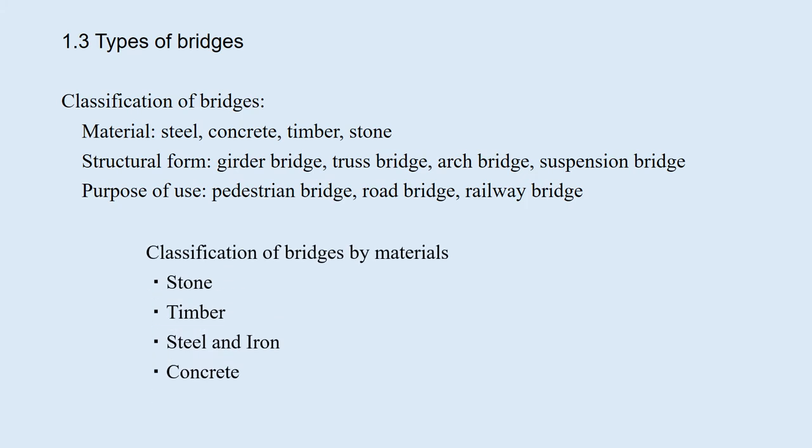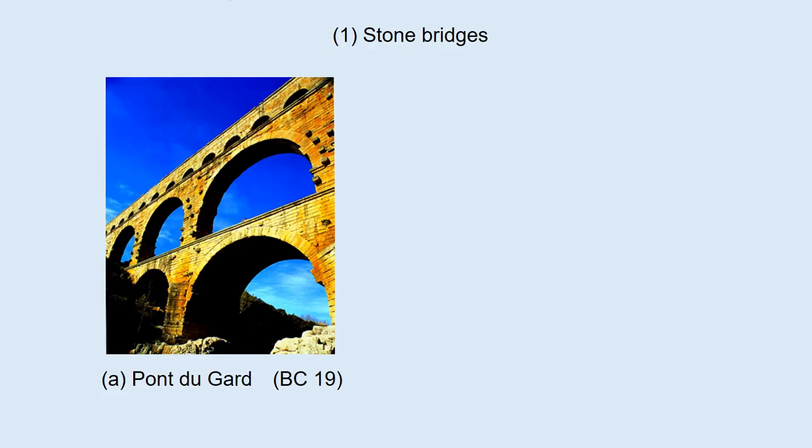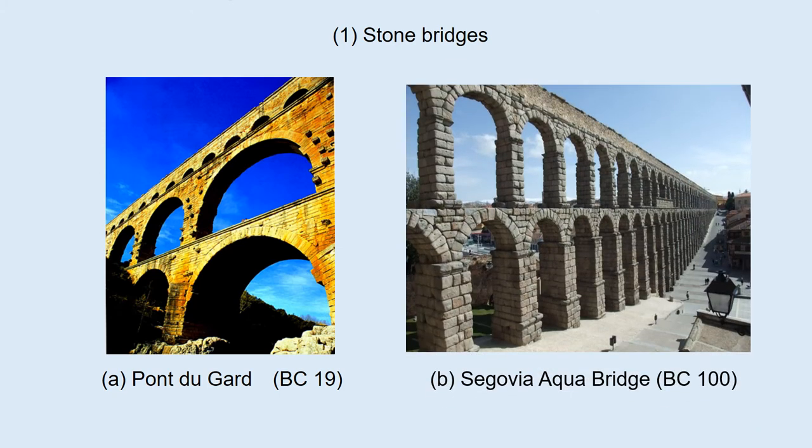Let's look at the classification of bridges by materials. Bridges are made of stone, timber, steel and iron, and concrete. First, stone bridges. This is the Pont du Gard in France, built in 19 BC — a very old bridge that still exists today. This is the Segovia Aqueduct Bridge in Spain, also very old, gigantic, and beautiful.